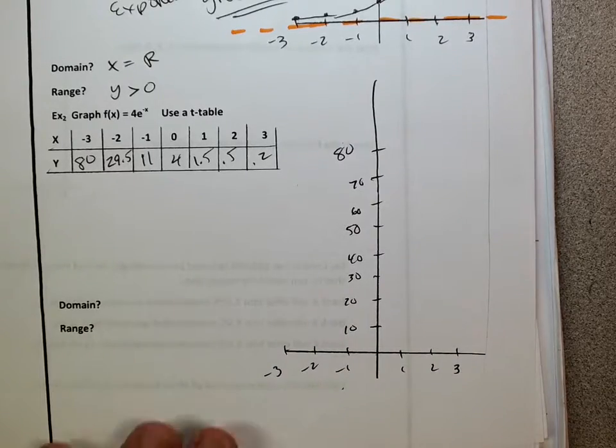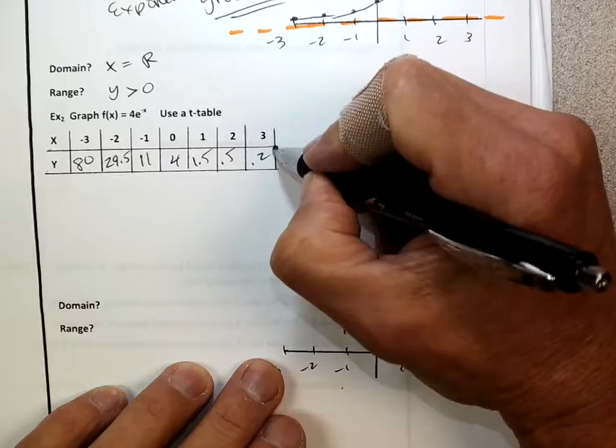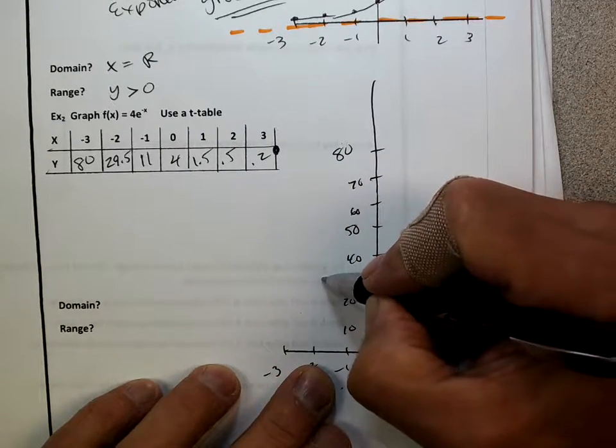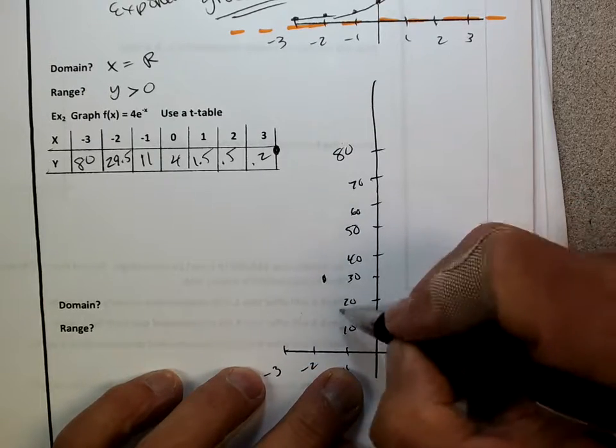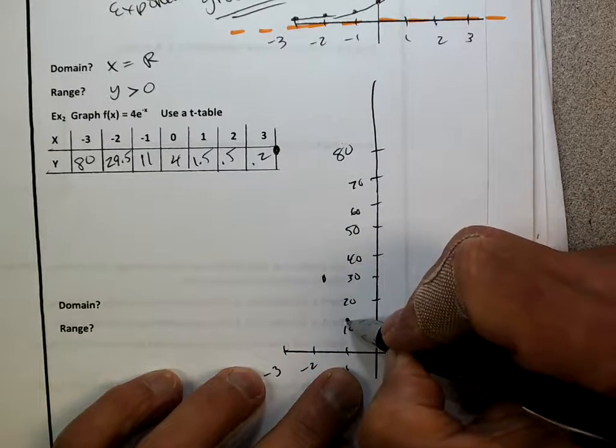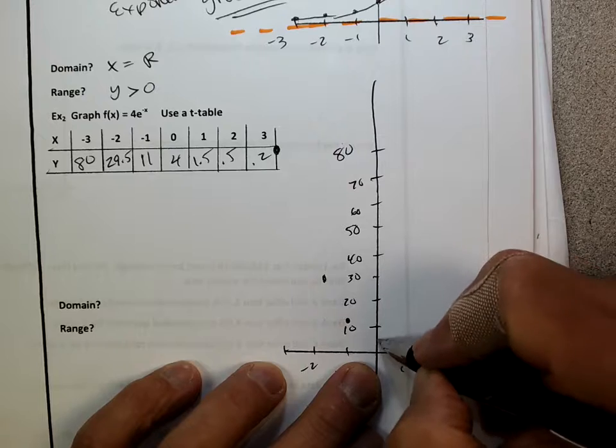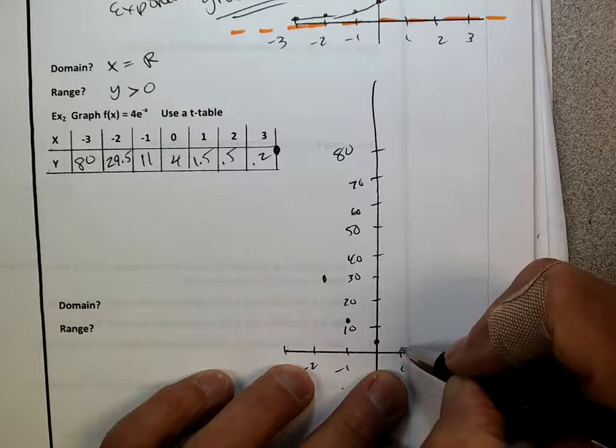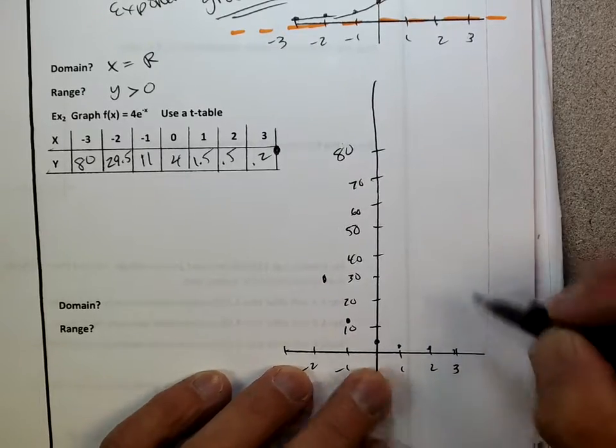And then, let's see, way up here at 80, dot way up there. Negative 2, about 29. It drops pretty quickly, doesn't it? Negative 1 is about 11. Zero is at 4. 1 is at 1.5. And then, of course, it just gets smaller and smaller.